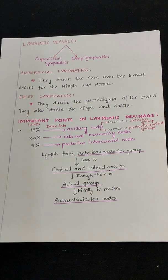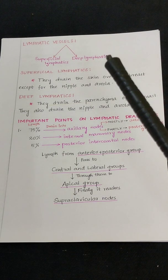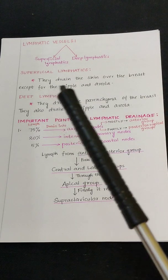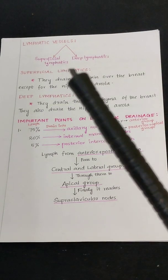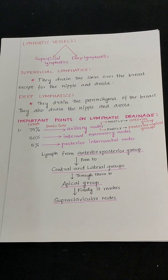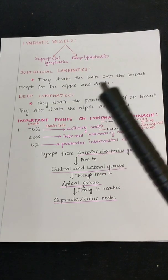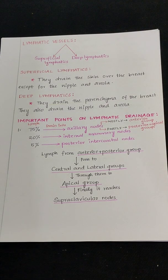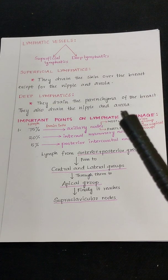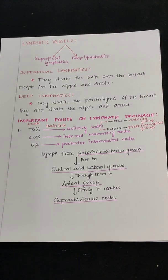Now let's move on to the lymphatic vessels, which are of two types: superficial lymphatics and deep lymphatics. Superficial lymphatics drain the skin over the breast, except for the nipple and areola. Deep lymphatics drain the parenchyma of the breast and also drain the nipple and areola.